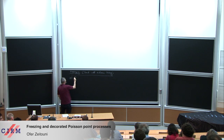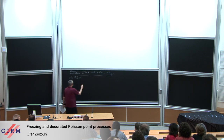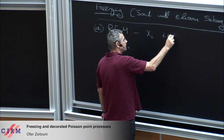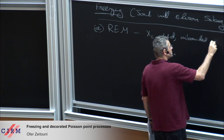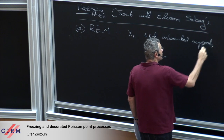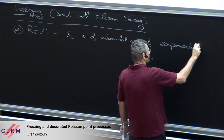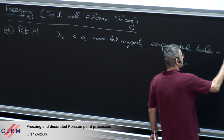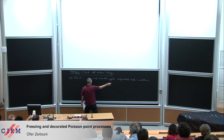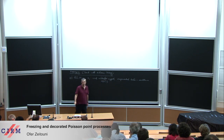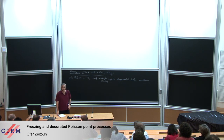The first example is what physicists call REM, and what we should call IID random variables. So what is REM? It's X_i, which are IID, of unbounded support with exponential tails plus some conditions on the tails. For our discussion, just think of them as being normal(0,1). Everything I'm going to say next is going to be specific to that case, although this is not essential.